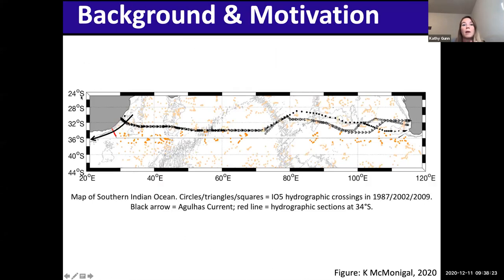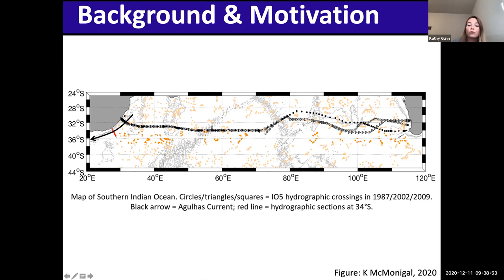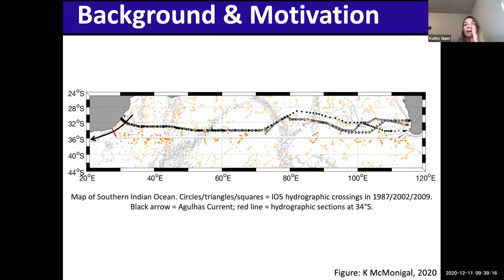To orientate ourselves, here is a map of the southern portion of the Indian Ocean, looking at 24 south to 44 south, 20 degrees east to 120 degrees east. We have South Africa here and the Agulhas current flowing southward and hugging South Africa, shown by the black arrow. We have Australia on the right-hand side. These triangles, squares, and circles show three hydrographic crossings that occurred in 1987, 2002, and 2009, nominally located at about 32 degrees south, collected as part of the WOCE program. They give us a synoptic view of water masses at those three discrete points in time, allowing us to investigate water mass variability at decadal timescales.